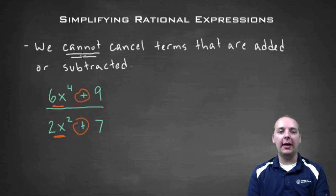So we cannot cancel individual terms that are simply added or subtracted in the numerator or denominator, only when you have factors. So do not try to cancel anything like that because of the plus nine and the plus seven.